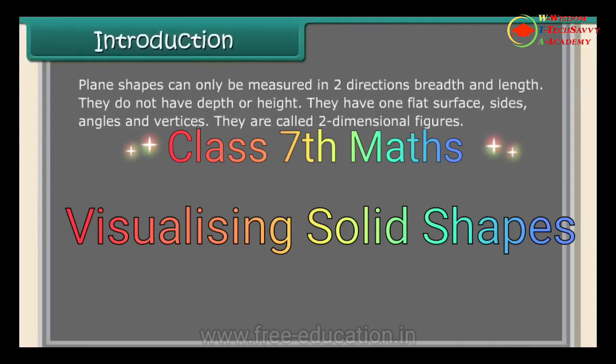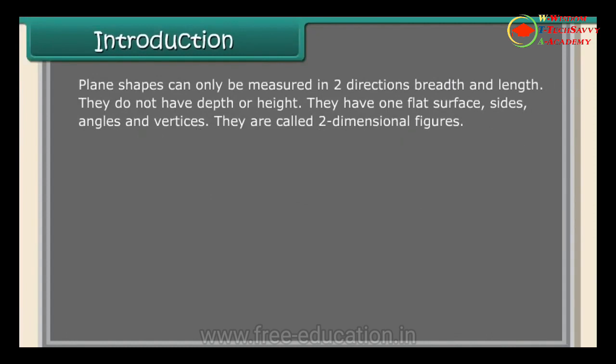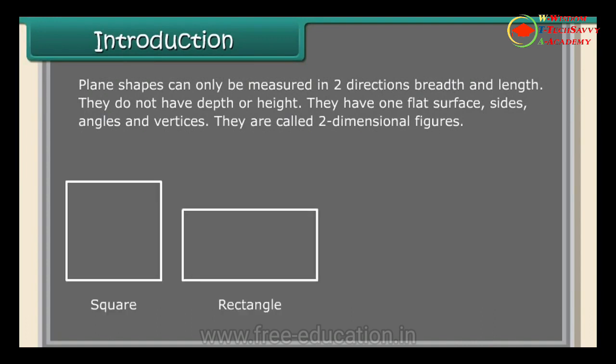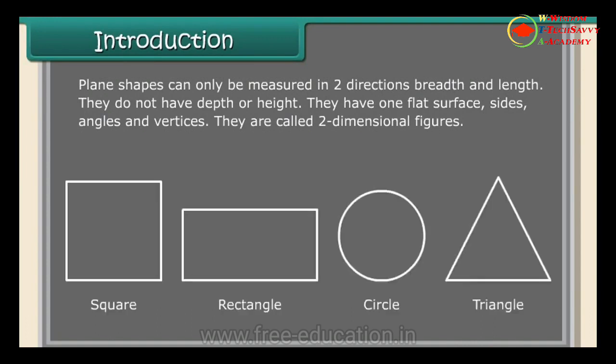Plane shapes can only be measured in two directions: breadth and length. They do not have depth or height. They have one flat surface, sides, angles, and vertices. They are called two-dimensional figures, such as square, rectangle, circle, and triangle.